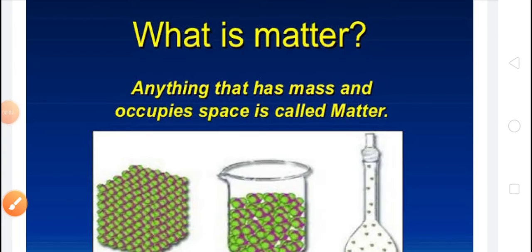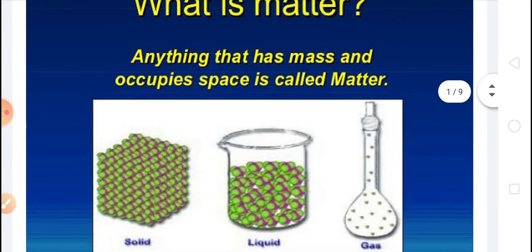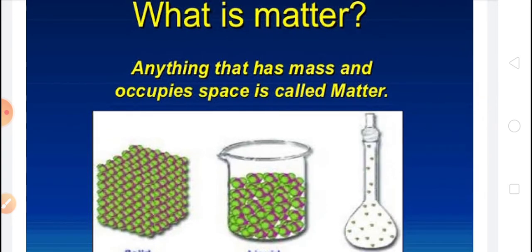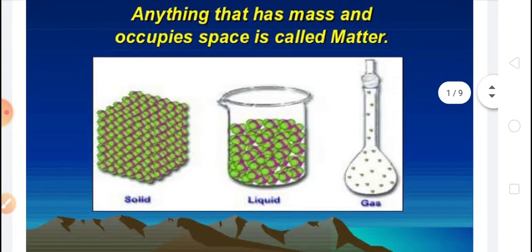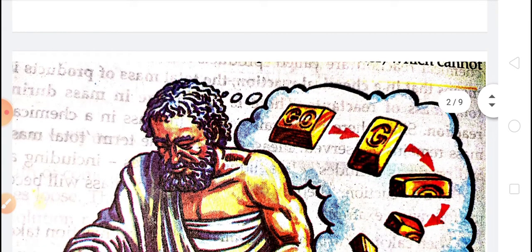In the first part of this video, we studied about materials, objects and matters. Matter means anything that occupies space and has mass. But the feeling of love, sadness or joy do not have mass and do not occupy any space. Hence, they are not matter. I hope you understood what is matter.